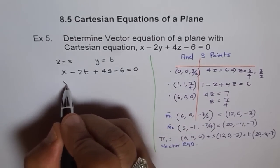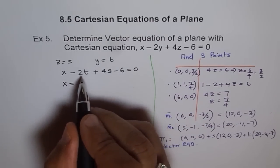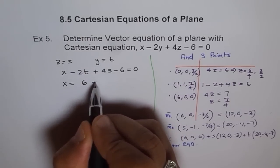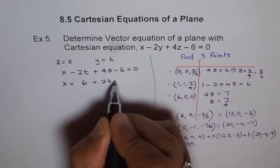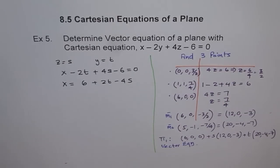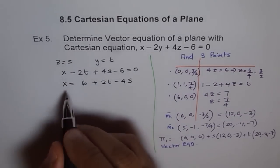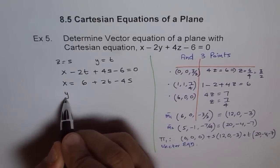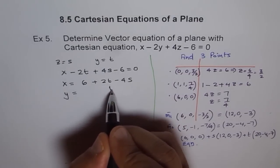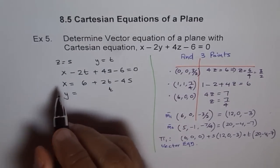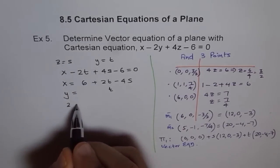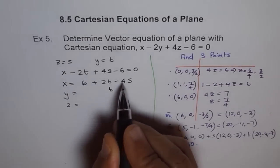That means X equals to, we will take it on the other side. So, we get 6 plus 2T minus 4S. That is the value of X. Now, we know X is this, but what is Y for us? Y is just T. So, let me just write T under T just to show you how I am going to find the direction vectors. And what is Z for me? Z for me is S. So I am writing S here.